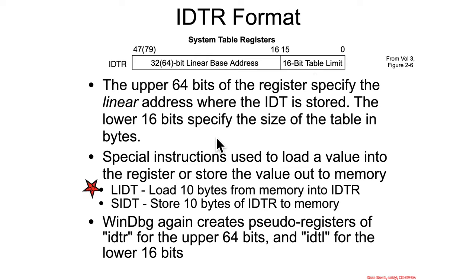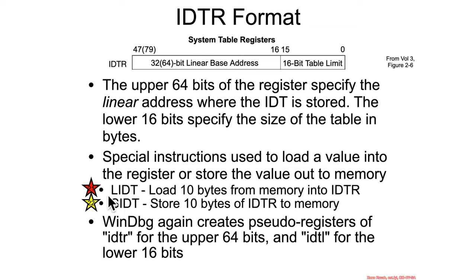Just like the GDTR had an LGDT, here we have an LIDT, which loads the 10 bytes from memory into the IDT register. And take a wild guess about whether this is going to be user space or kernel space — and it's user space again. So the dichotomy continues with a privileged instruction to write to the IDT register and unprivileged to read it.